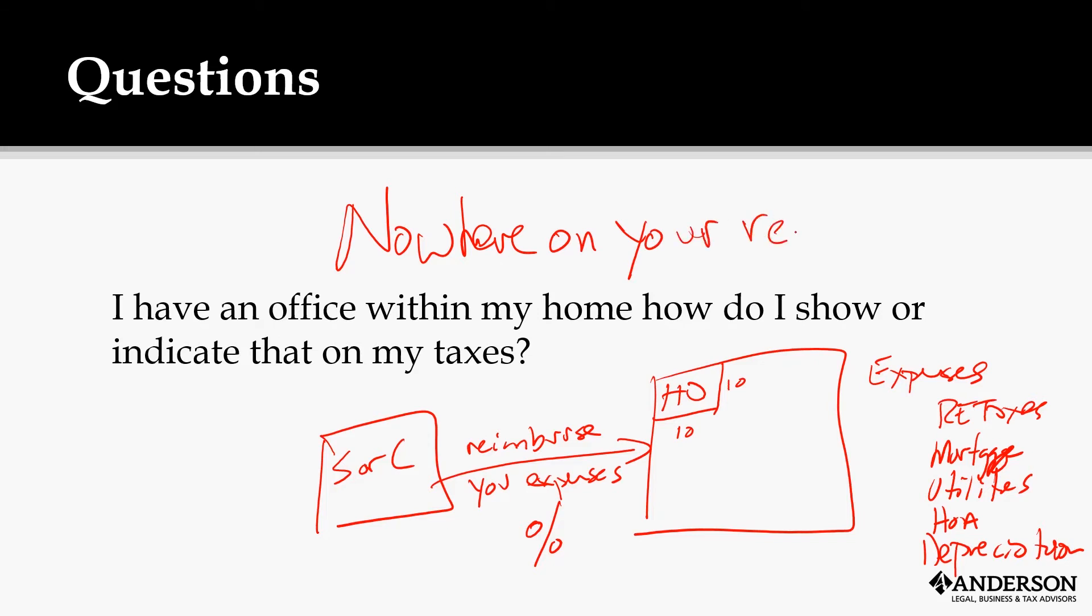I always use Krispy Kremes in my examples. If I asked Jeff, hey, on your way into the office grab some Krispy Kremes and I'll reimburse you, and Jeff buys Krispy Kremes and comes into the office and says that was 50 bucks, and we write him a company check for $50, where does Jeff report that? The answer is he doesn't, he got reimbursed.